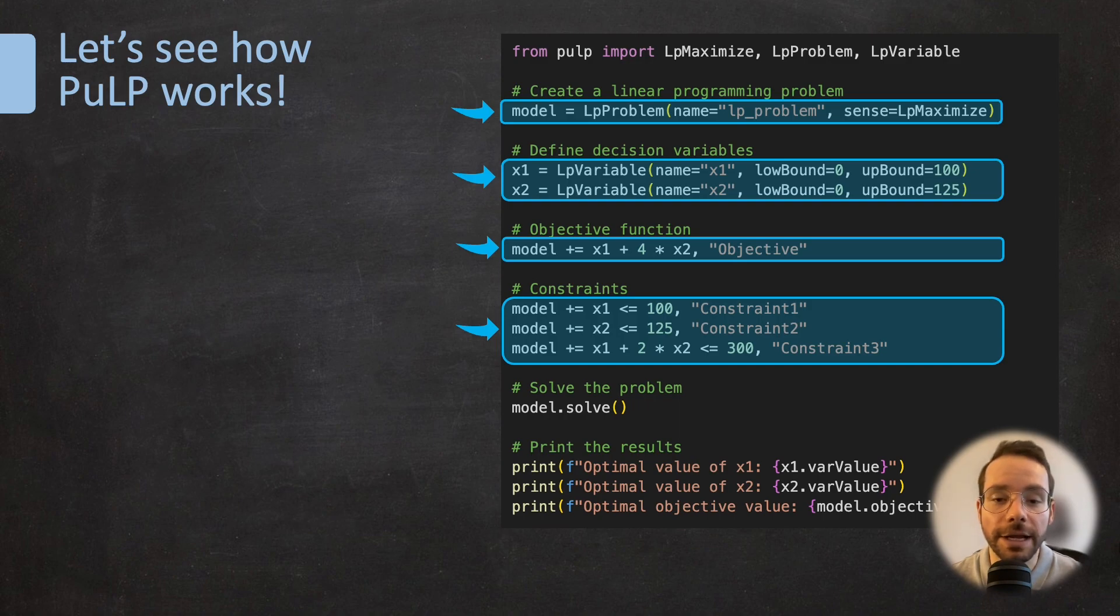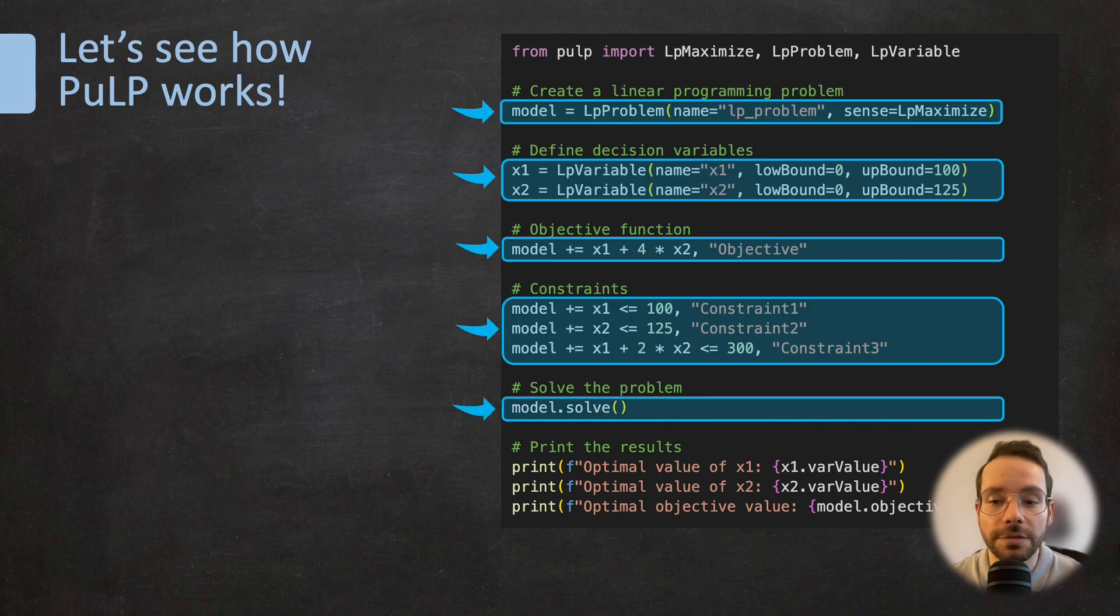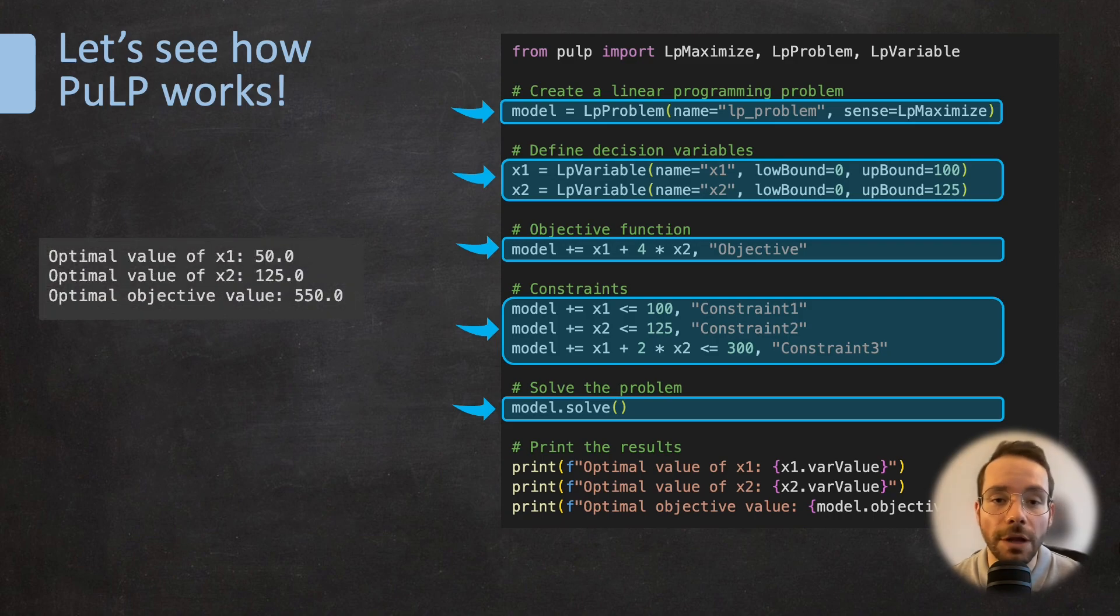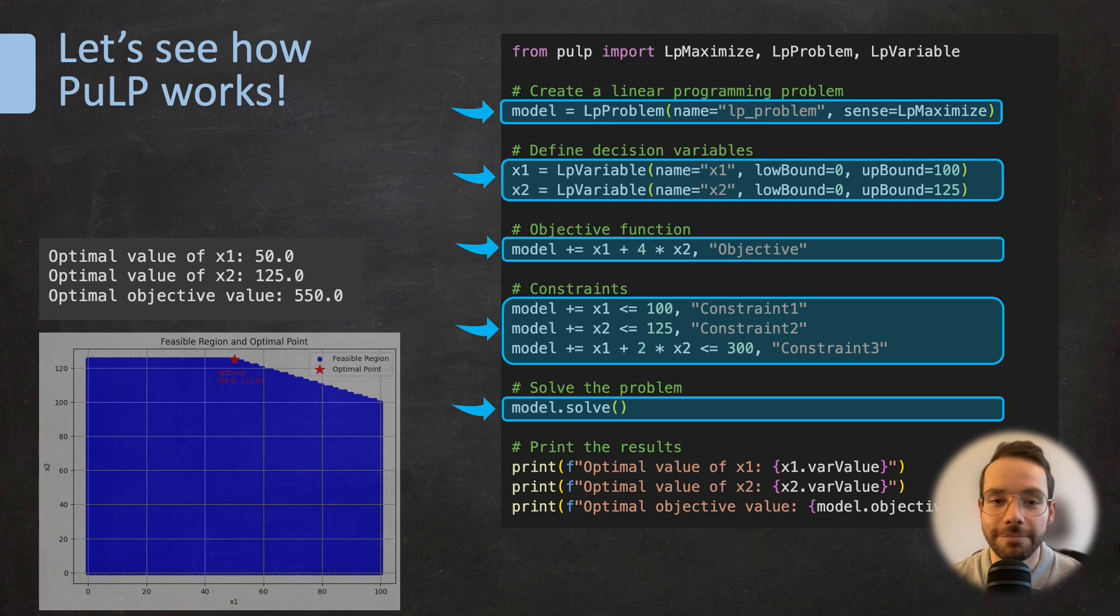And with the next line, we are going to call the PuLP solver to solve this linear programming problem for us. And then eventually, we are going to print the results and visualize it. And there you go. I hope you found this helpful. Thank you very much for watching. I'll see you in the next video.